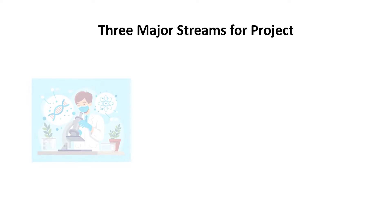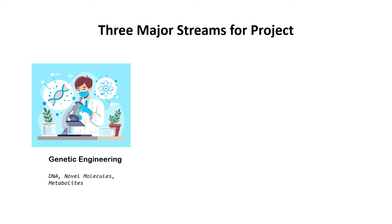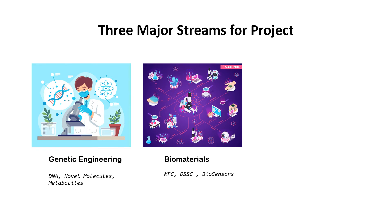Firstly, we have genetic engineering — a very wide sector where you can work on DNA, novel molecules, synthesis of new molecules, or metabolic engineering, but it requires a higher skill set and proper infrastructure. Next, we have biomaterials or energy, which is a combination or integration of biotech with other streams of engineering, giving hybrid materials such as microbial fuel cells (MFC), dye-sensitized solar cells, or biosensors. This is a very emerging field where you can find a unique thought process to perform a project.